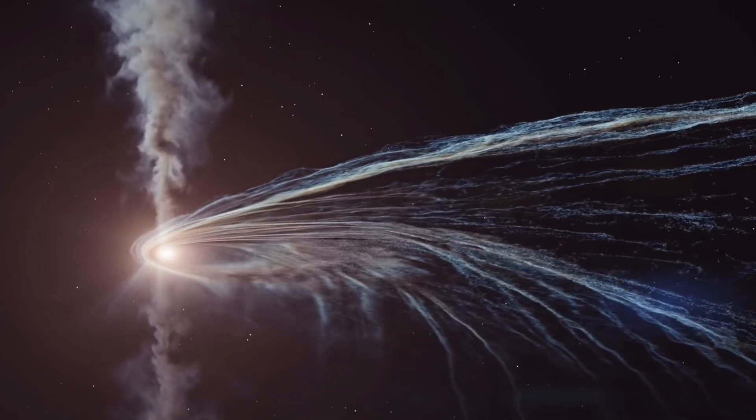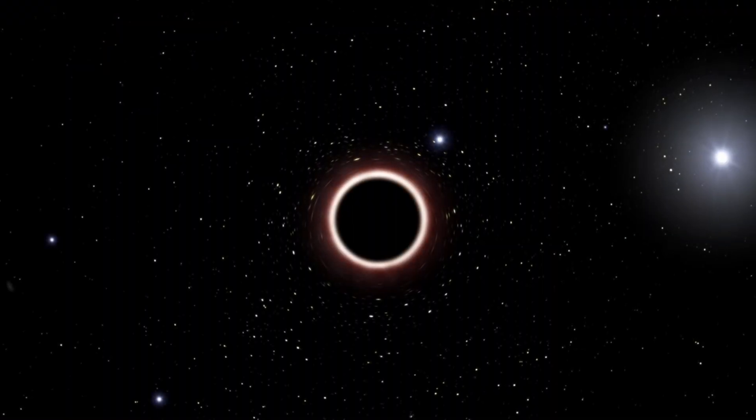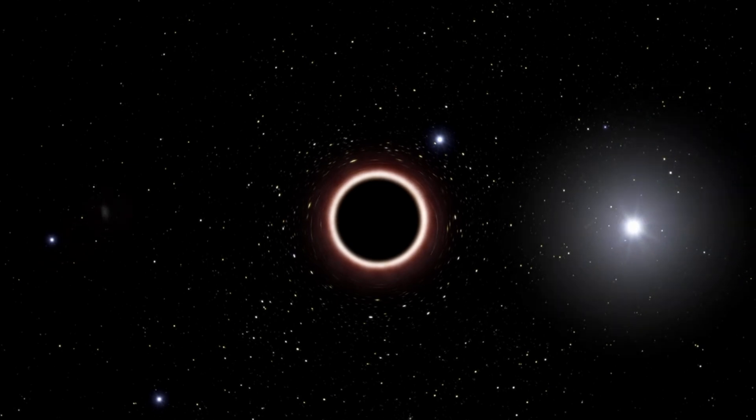This video explores the dire consequences of such an occurrence, highlighting the fragile balance within our solar system. The first and most immediate impact would be on the orbits of the planets and other celestial bodies.